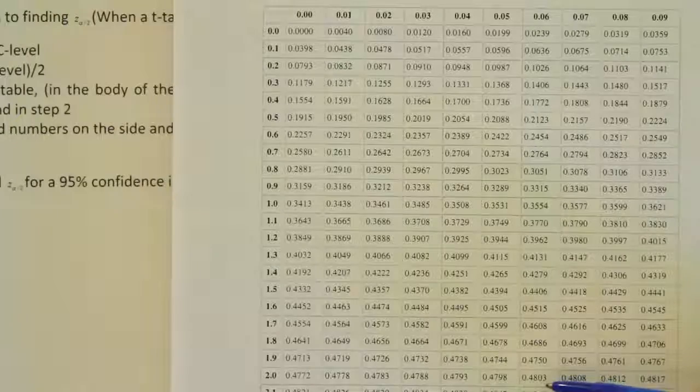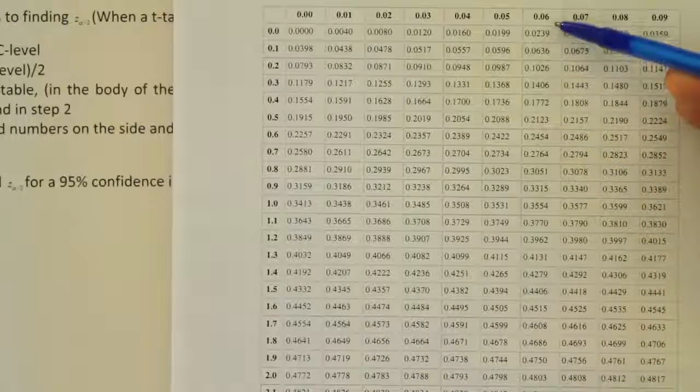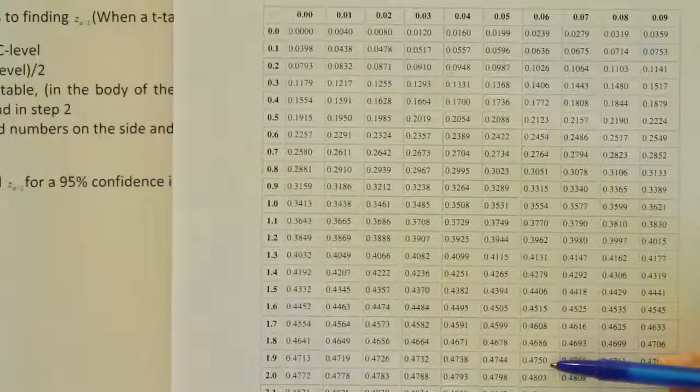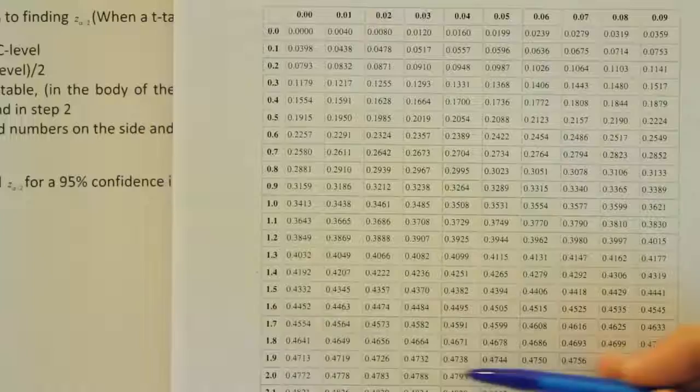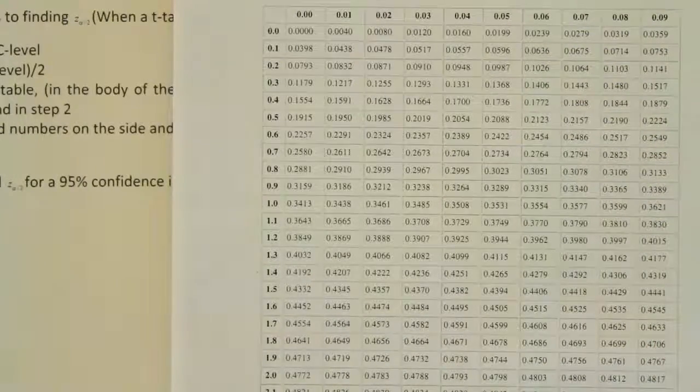1.9 row and then if we go all the way to the top we can see that it's actually the 1.96 value that's connected to 47.50 here. So it's 1.9 and then 6. So 1.96 is our critical z value.